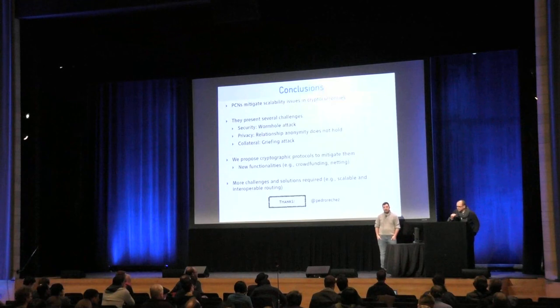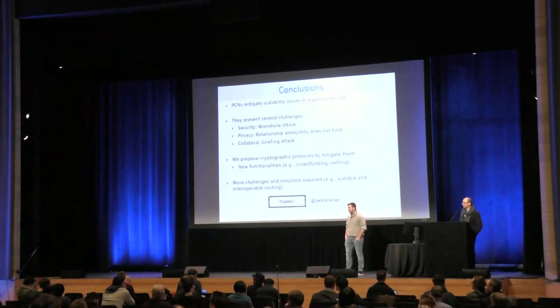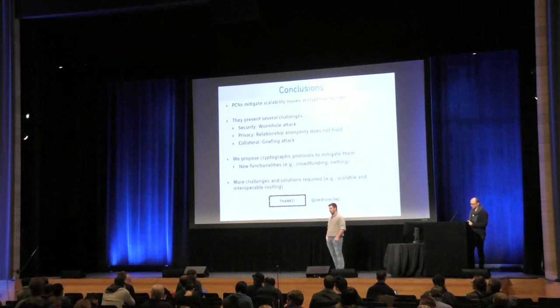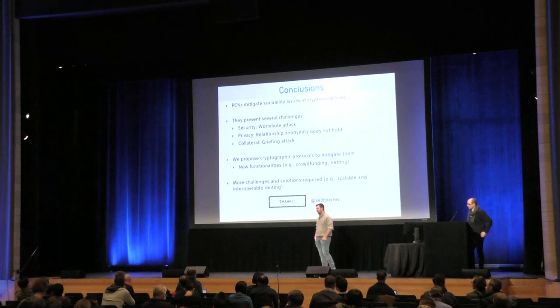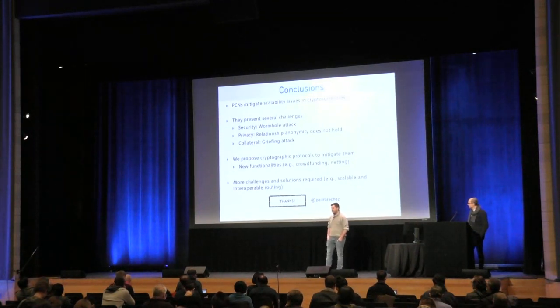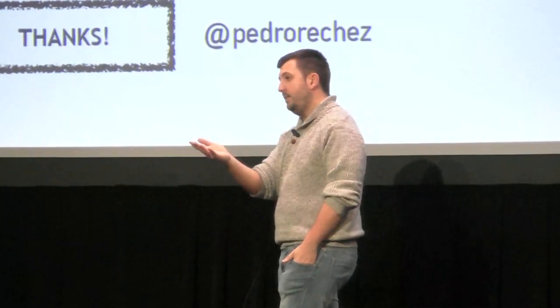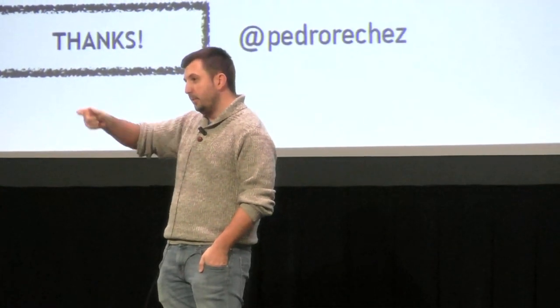Q&A: One question — it seems Alice needs to interact with every single entity along the chain. Doesn't this reveal information about commercial relationships between parties with lots of money? In practice, what is used is an onion packaging scheme: Alice sends information to each node, but the nodes receive the information without knowing where it originated.